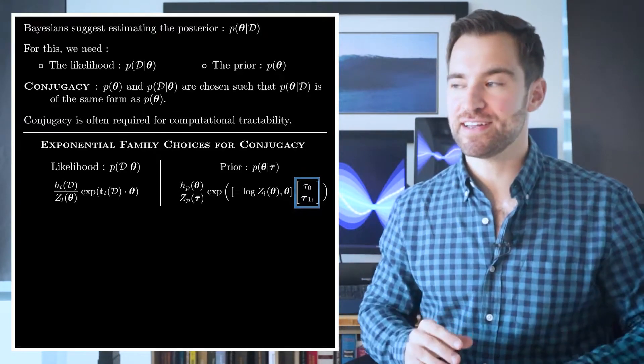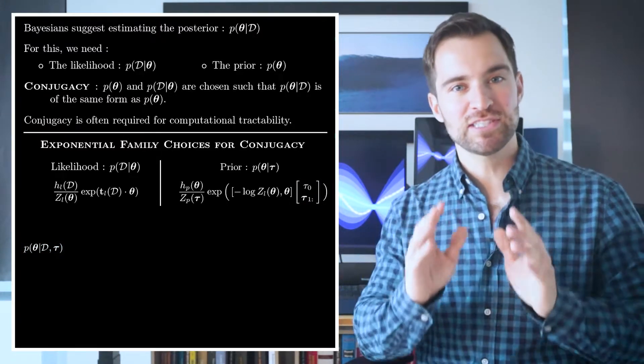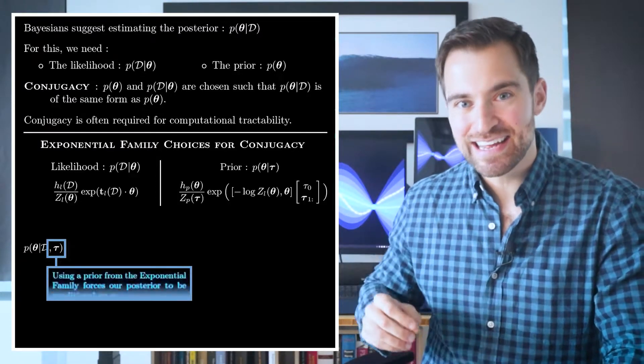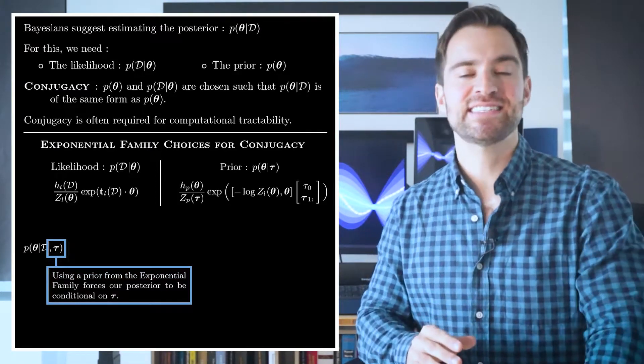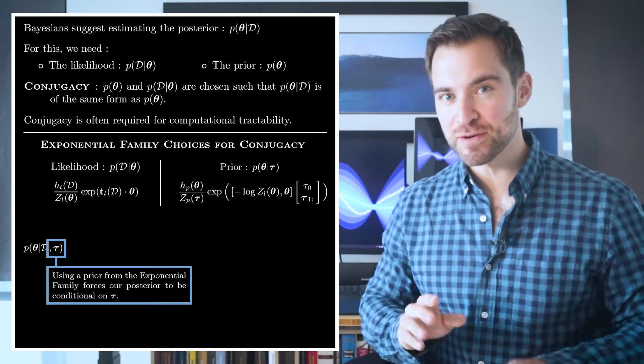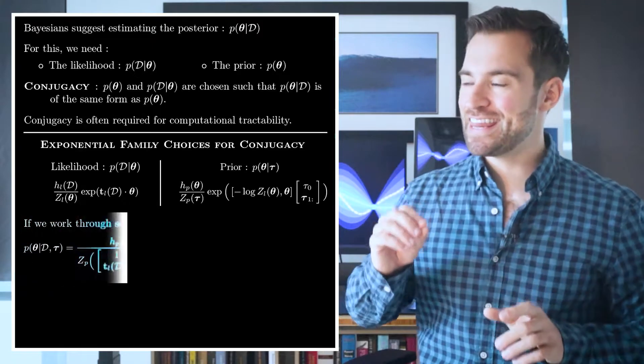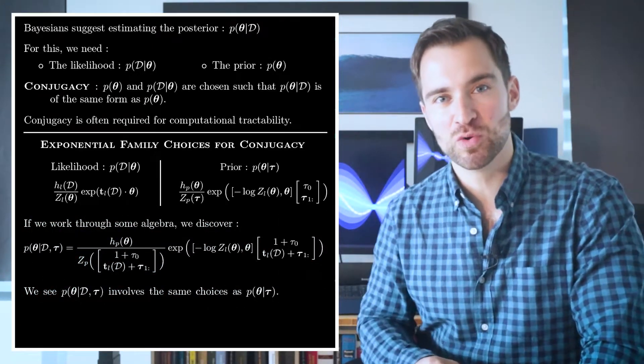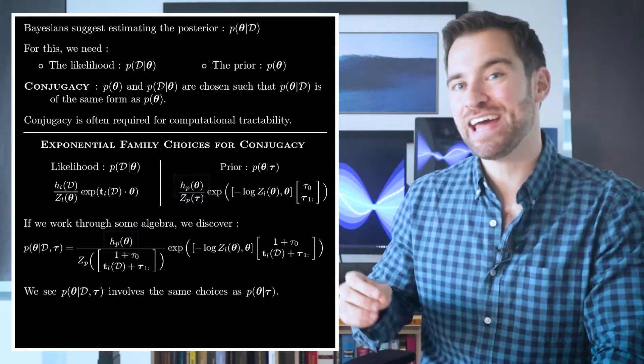With that, we can move on to what we are really interested in. This, the posterior distribution of θ given our data. I've added conditioning on the τ vector since this is required by our choice of prior. Now, if we do some algebra, which I'll show in a minute, we get this. If we compare this with the prior, we see they involve the same choices. This is the same, and this is the same.